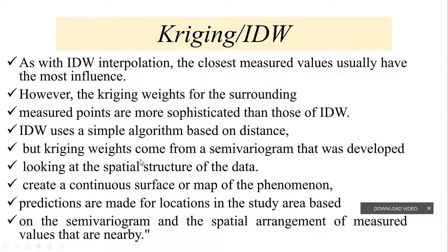Whereas Kriging creates weights from variograms that were developed by looking at the spatial structure of the data. The spatial statistics of the point at a particular place form a variogram, and those spatial statistics are correlated with other environmental factors to create a continuous surface or map of the phenomenon.